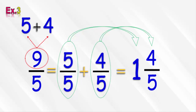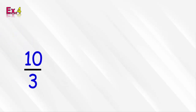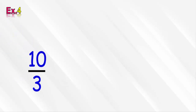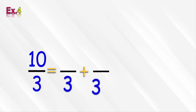Now let's see our last example. In this example we need to convert the fraction 10 over 3 into a mixed number form. As usual, we start by writing the improper fraction in the form of a sum of 2 like-denominator fractions with denominator 3, like this.